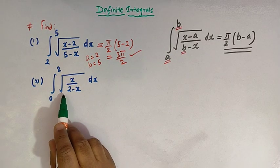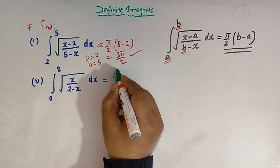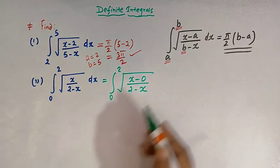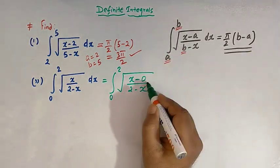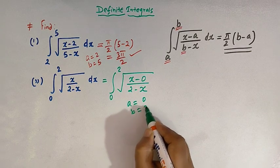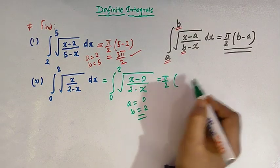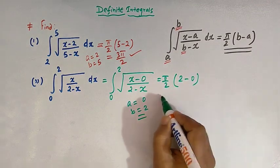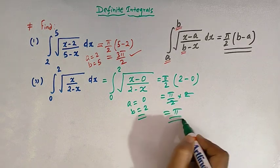Now to find the value of the second integral, we rewrite it as the integral from 0 to 2 of √((x − 0)/(2 − x)) dx. This integral now takes the form of our direct result formula. Here the value of a is 0 and the value of b is 2. So the value of this integral is π/2 times (2 − 0), which is π/2 times 2. The 2s cancel and we are left with π.